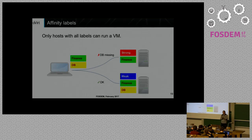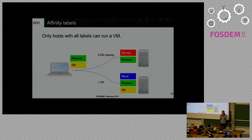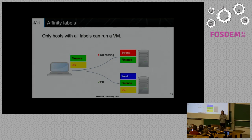Here's how affinity labels work: a virtual machine that's supposed to start has two labels, Finance and DB. We have two physical nodes — the first has Strong and Finance labels, the second has Weak, Finance, and DB labels. Our algorithm checks whether the host has the same labels or more than the VM requires. We require all labels on the VM to also be present on the host; if there are extra labels we don't care. As you can see, the DB label is missing from the first node, so we will never consider it.